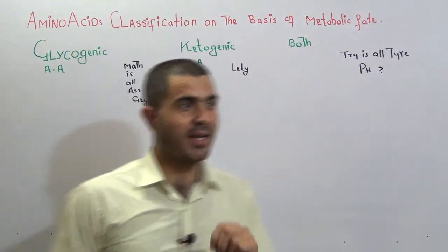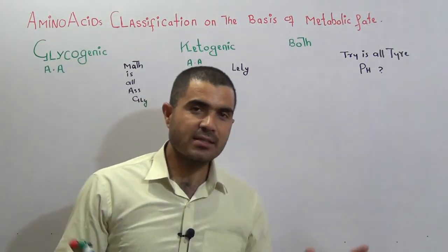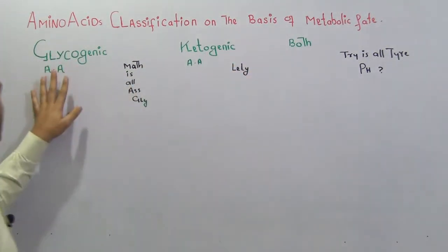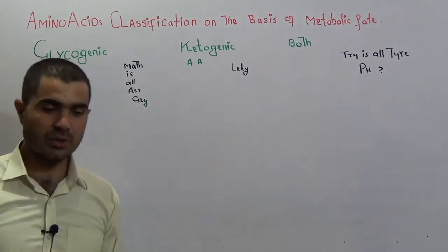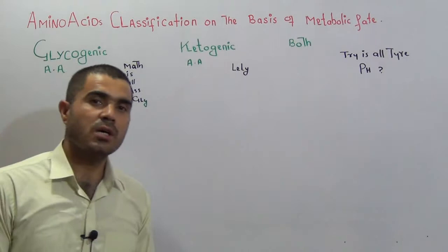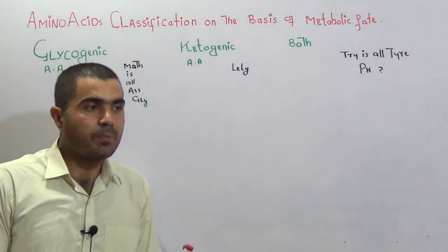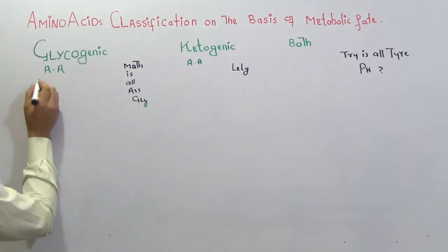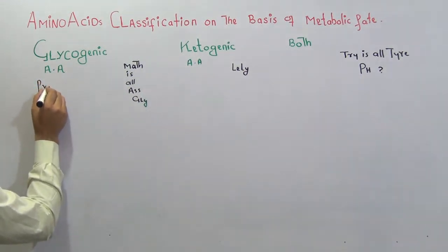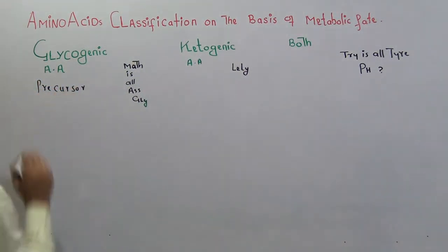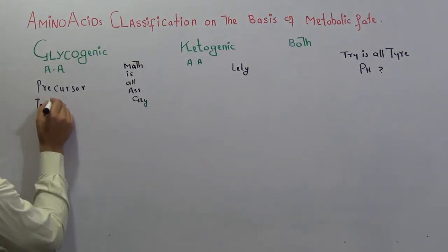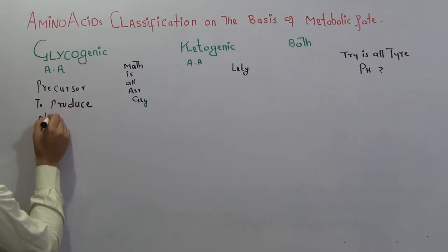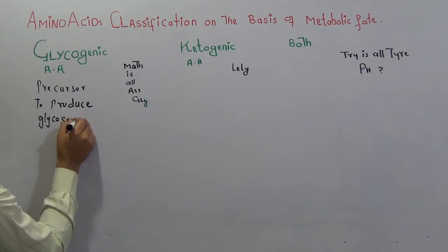So the amino acids classification in this category falls into three subheadings. The first one is glycogenic amino acids. Glycogenic amino acids, those amino acids which give us carbohydrate or glucose, means they can act as a precursor, as a precursor. Glycogenic amino acid, glycogen or glucose.